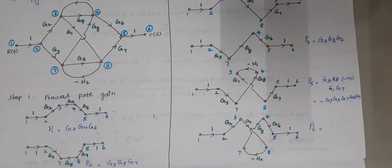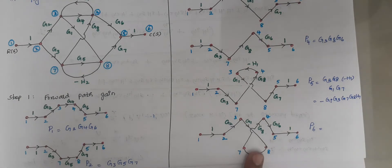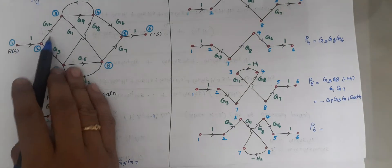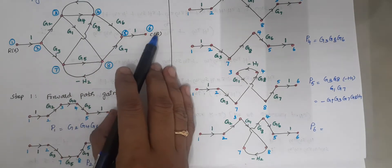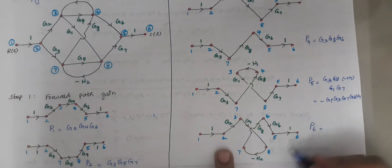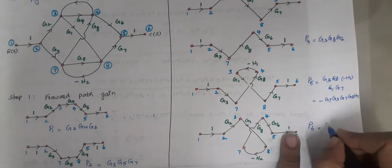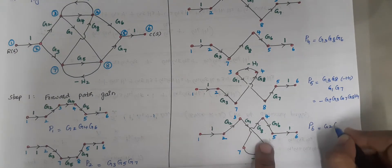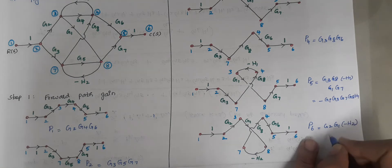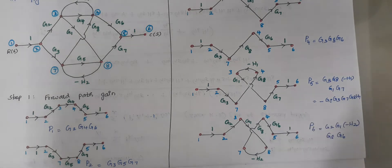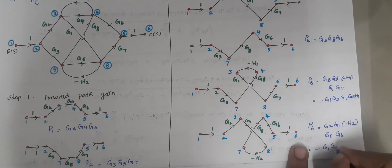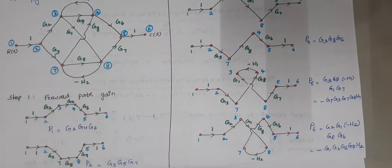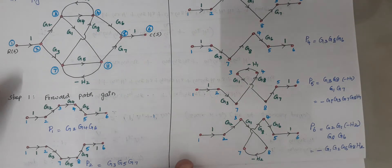Consider the last forward path: 1, 2, 3, 8, 7, 4, 5, and 6. Multiplying the branch values: G2 × G1 × (−H2) × G8 × G6. Bringing the negative sign to the front gives P6 = −G1 · G2 · G6 · G8 · H2. So totally we have 6 forward paths in this problem.